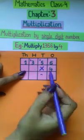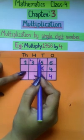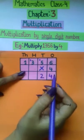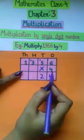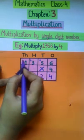Then we multiply with the 10's. 4 into 5 is 20 plus 2. 2 and 2. Then we multiply with the 100's. 4 into 3 is 12 plus 2 is 14.